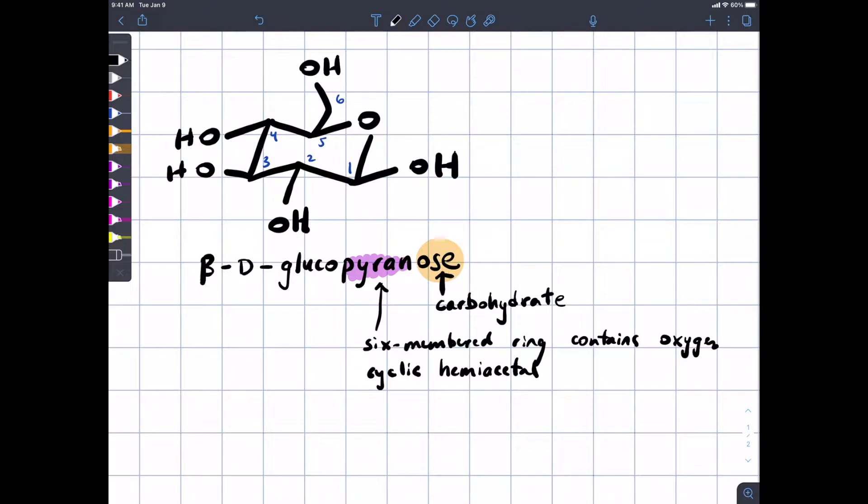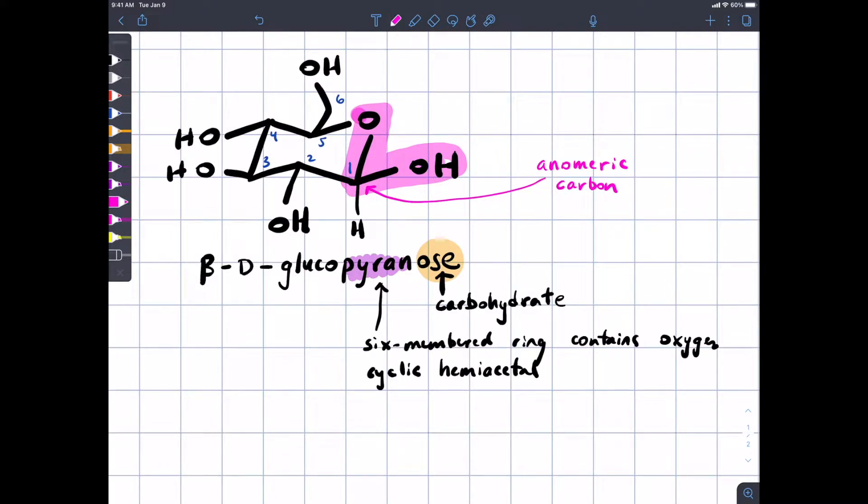The carbon number one is the one that's bonded to an OR group and an OH group, so that carbon one is the one that's involved in the hemiacetal. There's a hydrogen here, and we will call this carbon the anomeric carbon, which just means it's the hemiacetal carbon. But, you'll hear people use that word.